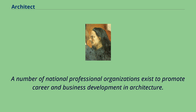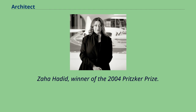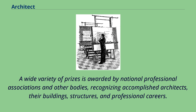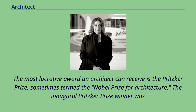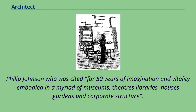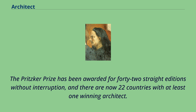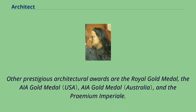Zaha Hadid, winner of the 2004 Pritzker Prize. A wide variety of prizes is awarded by national professional associations and other bodies, recognizing accomplished architects, their buildings, structures, and professional careers. The most lucrative award an architect can receive is the Pritzker Prize, sometimes termed the Nobel Prize for Architecture. The inaugural Pritzker Prize winner was Philip Johnson who was cited for 50 years of imagination and vitality embodied in a myriad of museums, theaters, libraries, houses, gardens, and corporate structures. The Pritzker Prize has been awarded for 42 straight editions without interruption, and there are now 22 countries with at least one winning architect. Other prestigious architectural awards are the Royal Gold Medal, the AIA Gold Medal, and the Premio Imperiale.